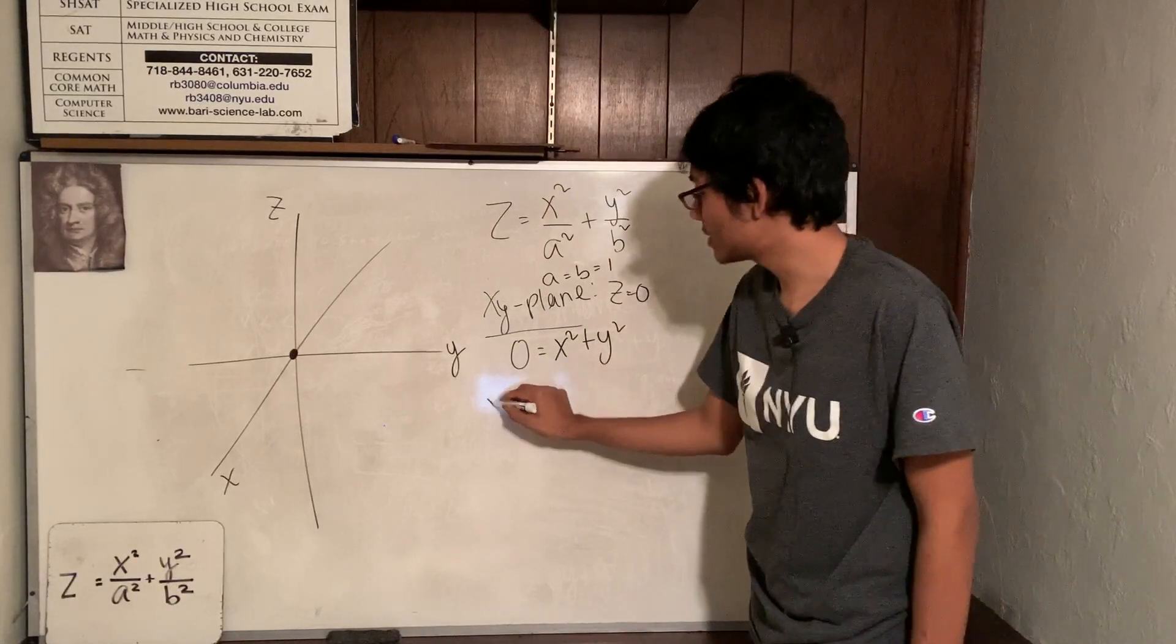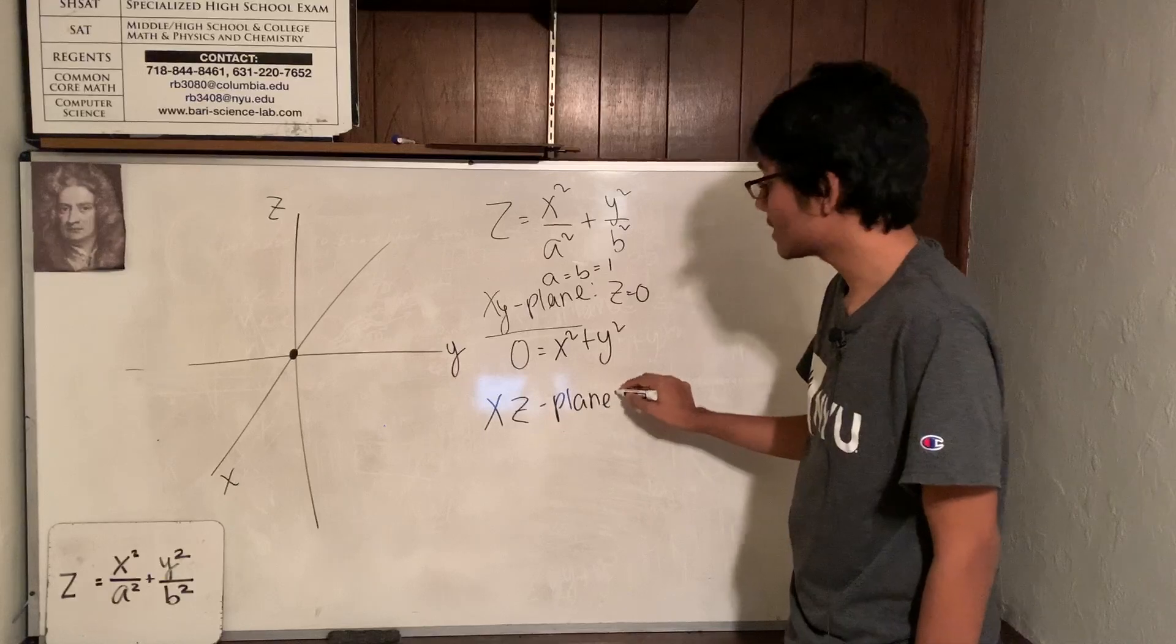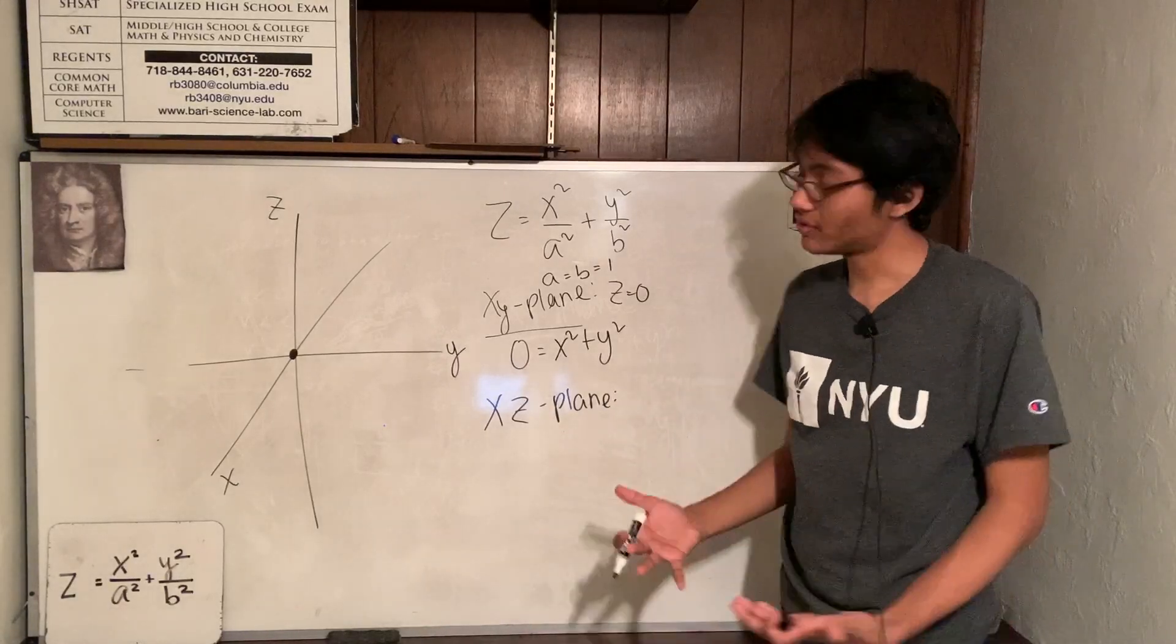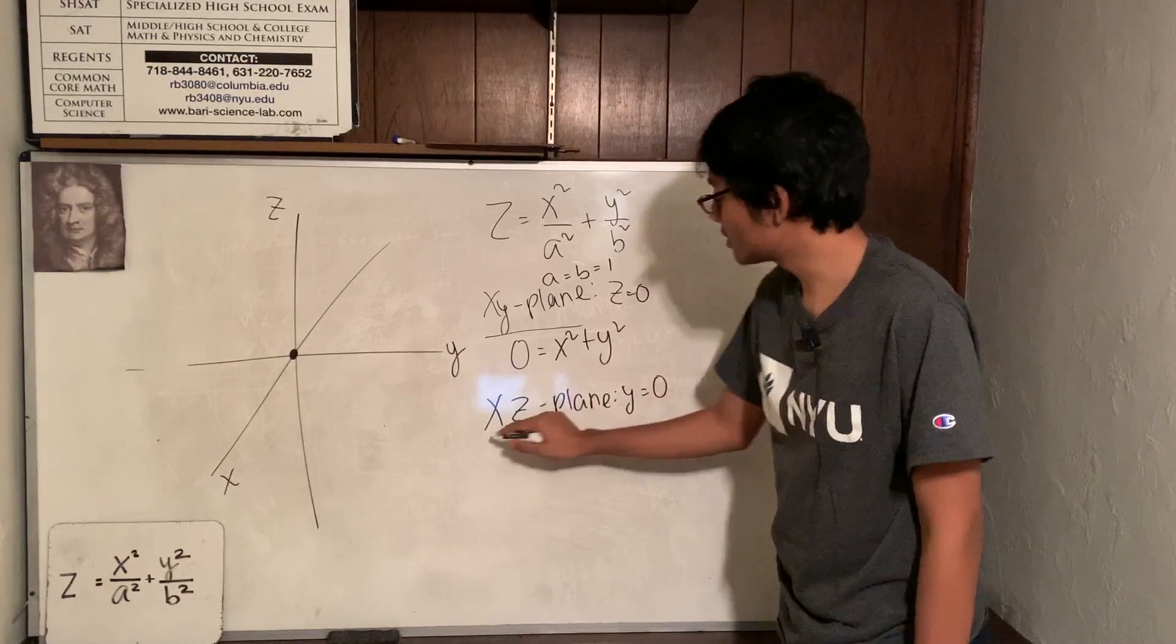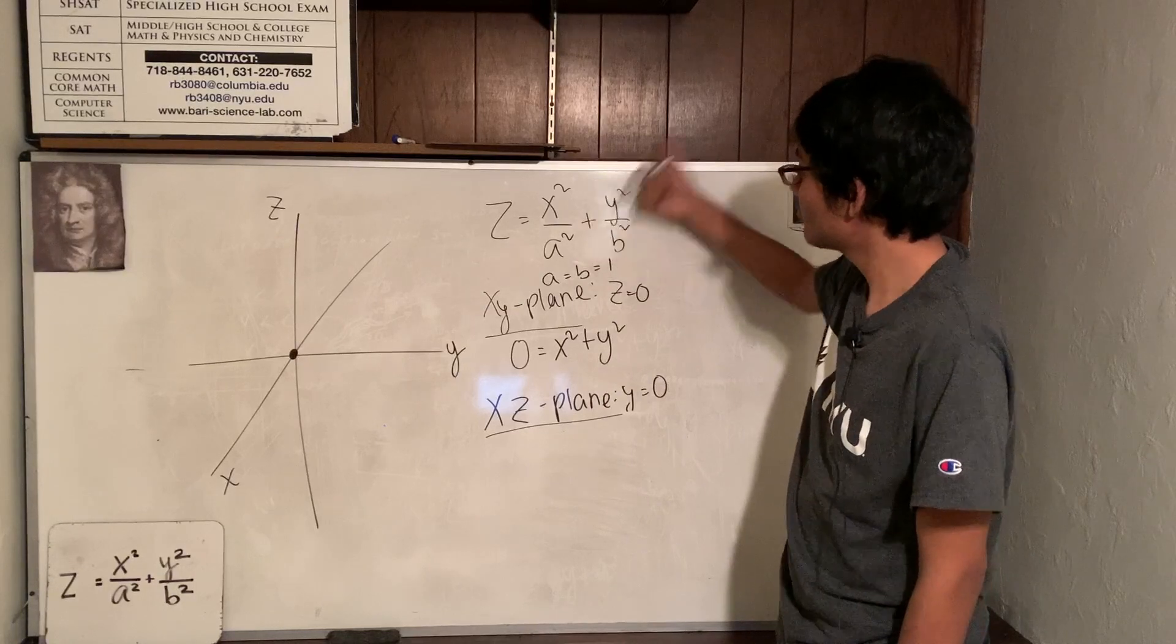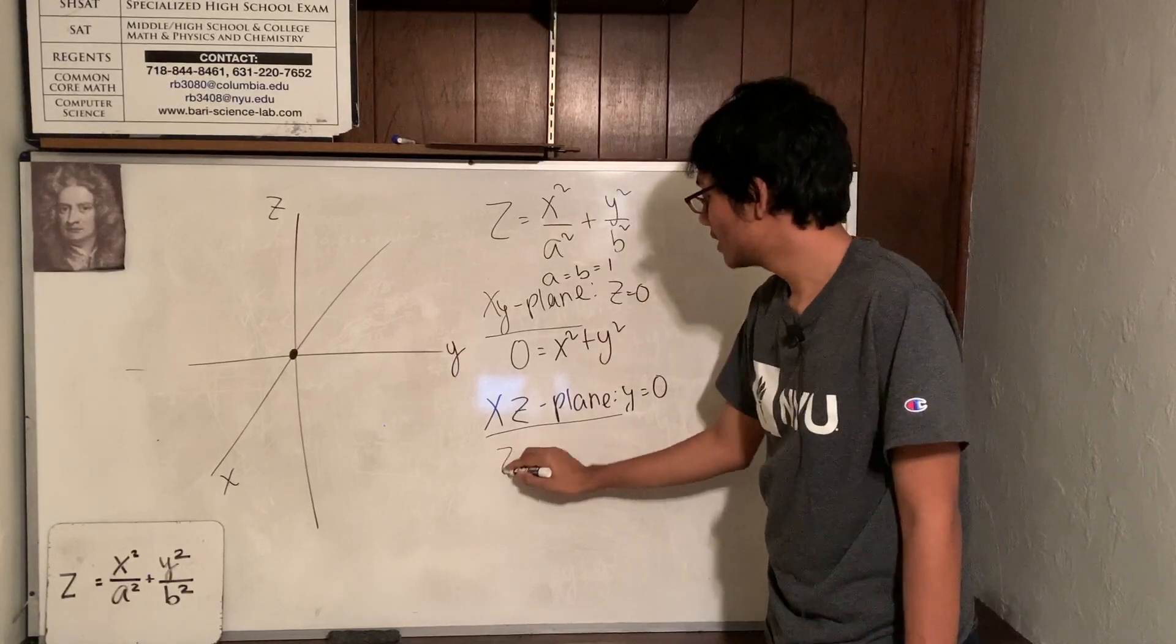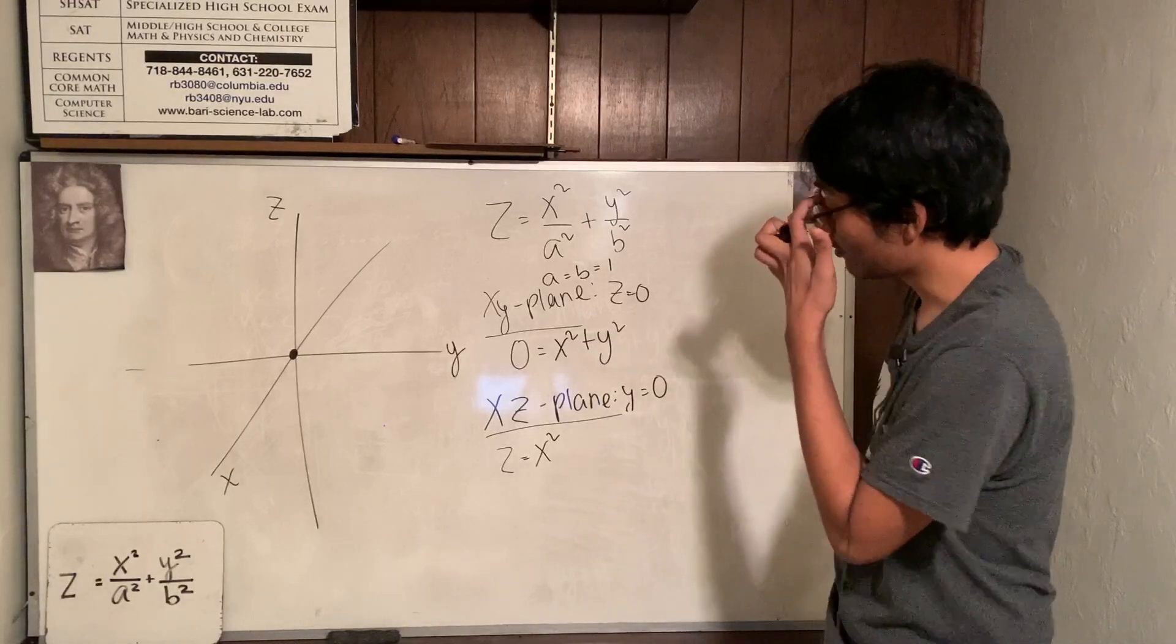Okay, let's see if the other planes tell us something. How about the xz plane? Remember, if you want to find the cross section there, we got to set the y variable to zero. Let's see what that gets us. Take this term, pop it out. What do we have left? z equals x squared. That is a parabola.